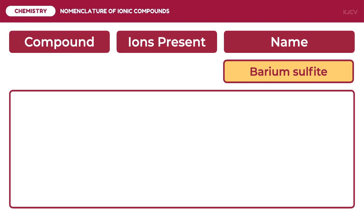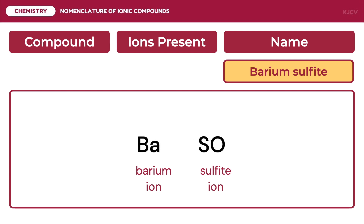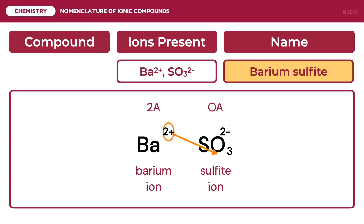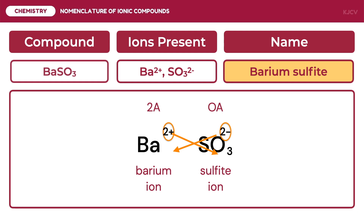For the last example, we are going to write the formula for barium sulfite. This may sound like a binary ionic compound, but take note that the ion is sulfite and not sulfide — meaning this is a polyatomic ion. The two ions are barium and sulfite. Barium is in group 2A, so its charge is positive 2. Sulfite, being an oxyanion, is based on sulfate. If sulfate is SO₄²⁻, then sulfite becomes SO₃²⁻ because anions ending in "-ite" have one less oxygen than anions ending in "-ate". After doing a criss-cross of charges, since both charges are 2 (with opposite signs), the subscripts simplify to 1. Thus, the chemical formula is BaSO₃.